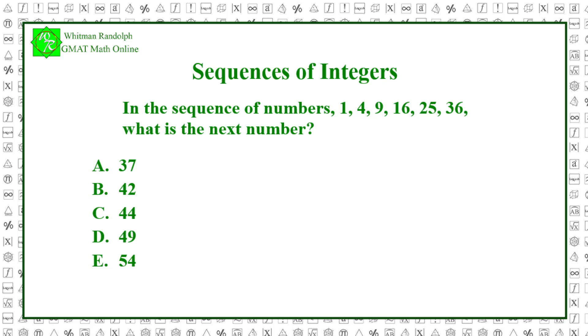Let's find the solution. This sequence of numbers is the numbers 1 through 6 squared. So the next number will be 7 squared, which equals 49. So the correct answer is D.